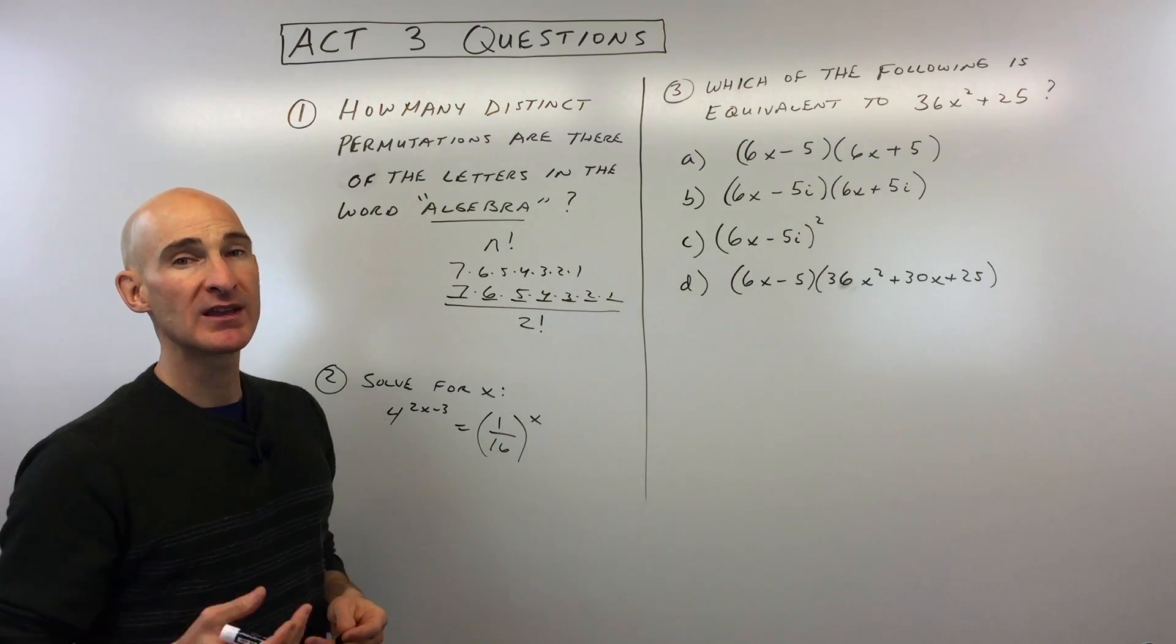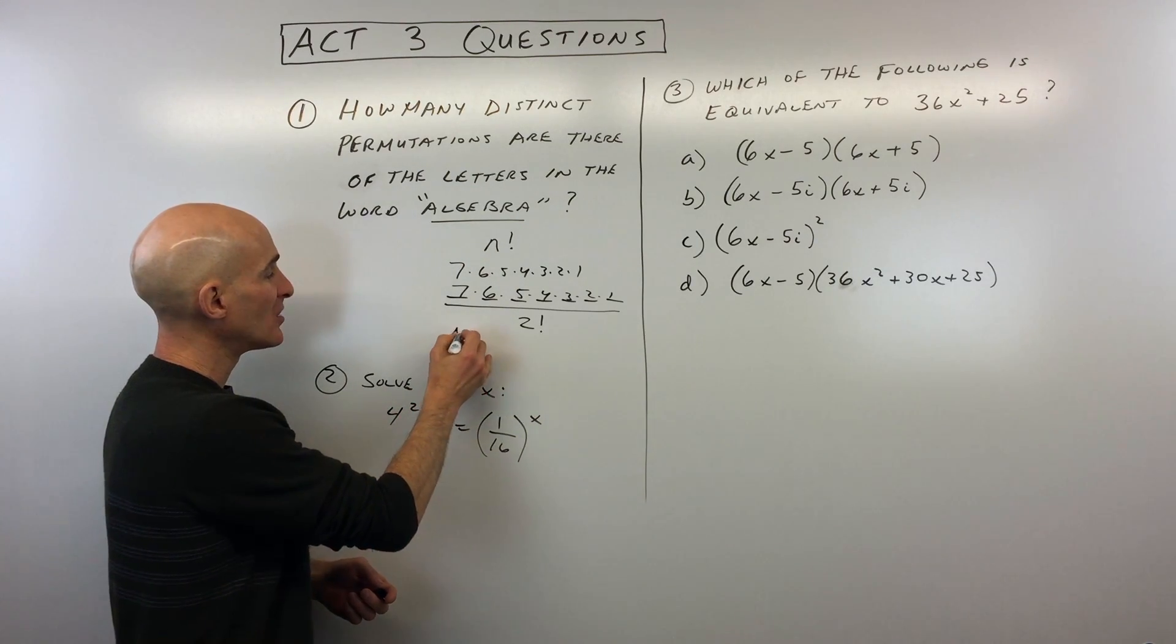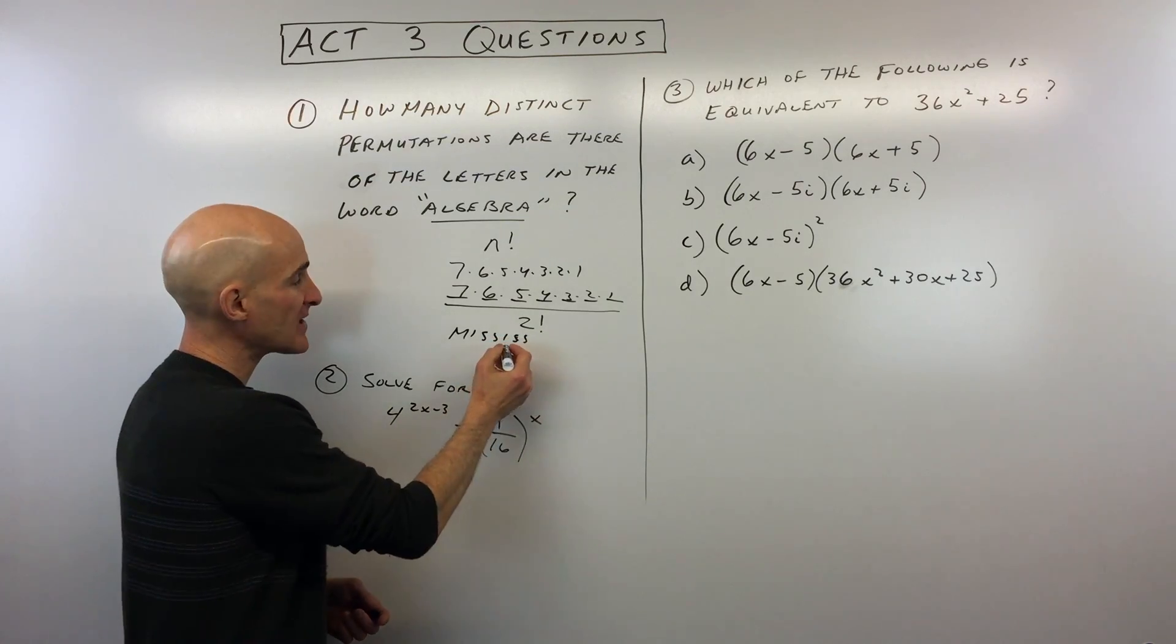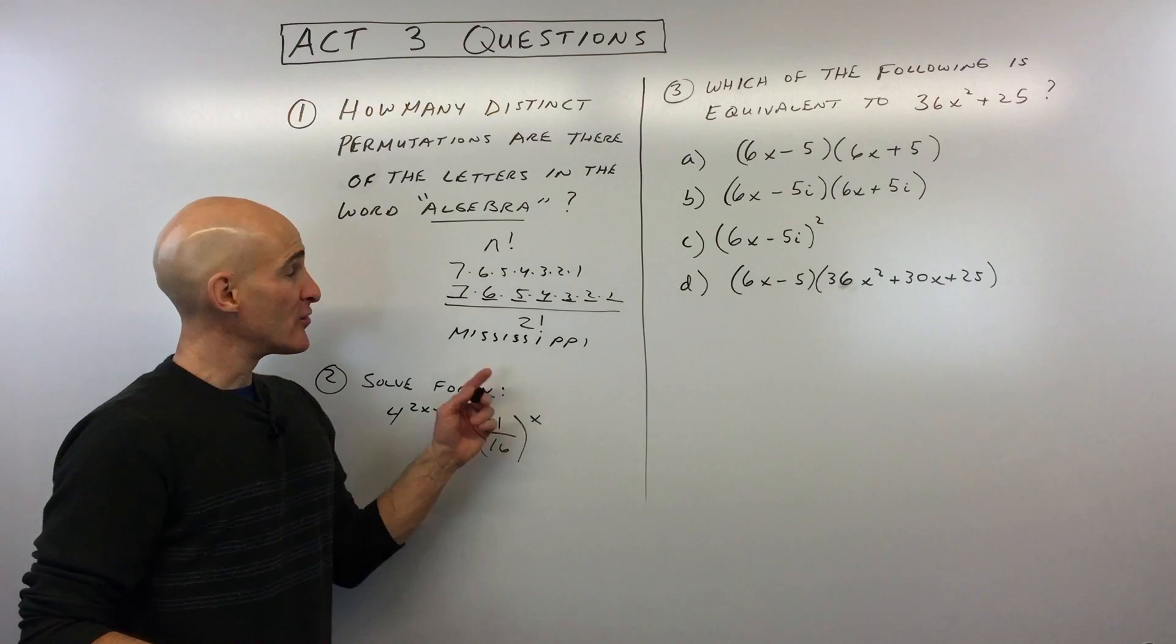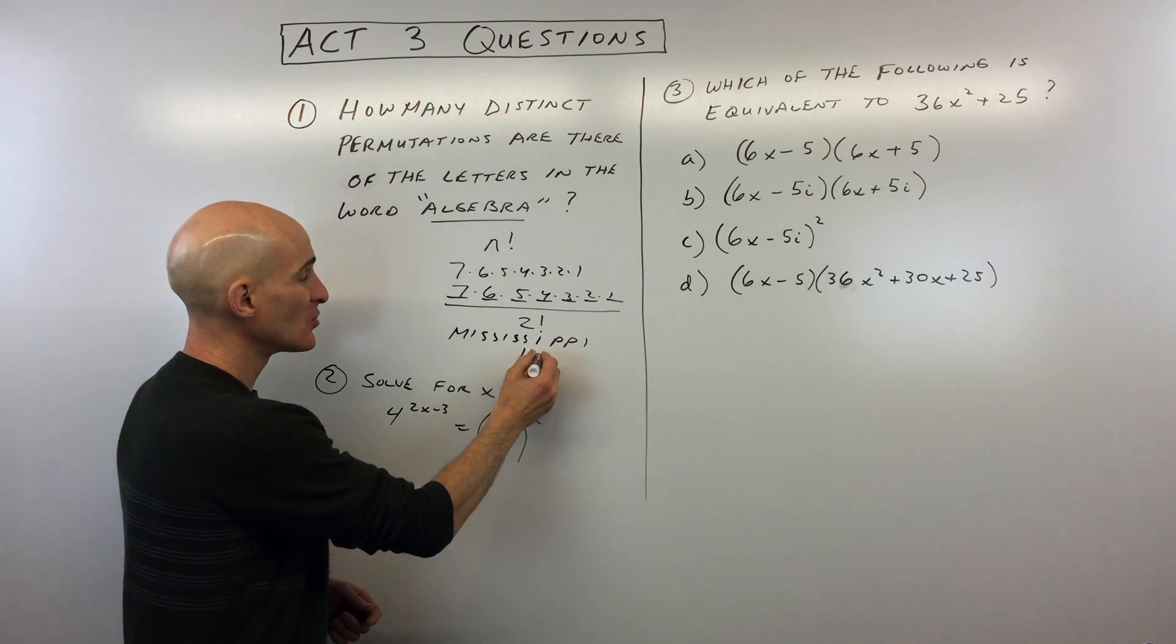Now I'll just give you another example similar to this one in case you want to see a more general example. Say for example we took the word Mississippi, okay? This is a common example, M-I-S-S-I-S-S-I-P-P-I. There's 11 letters here.